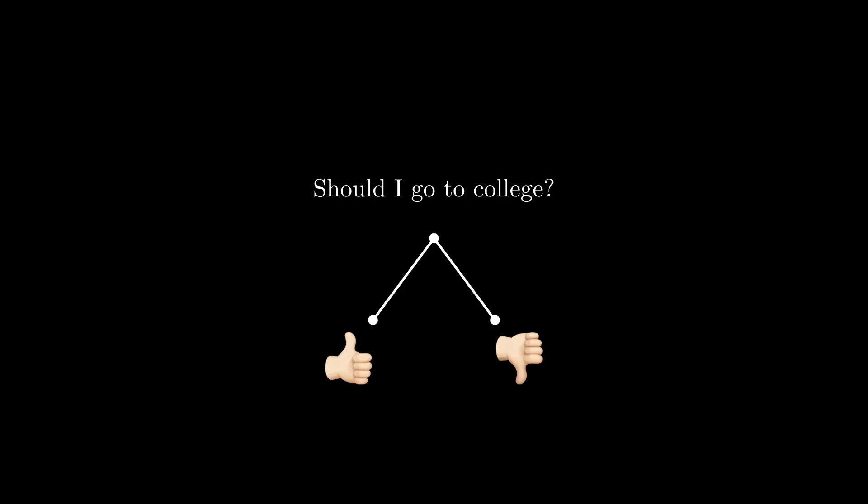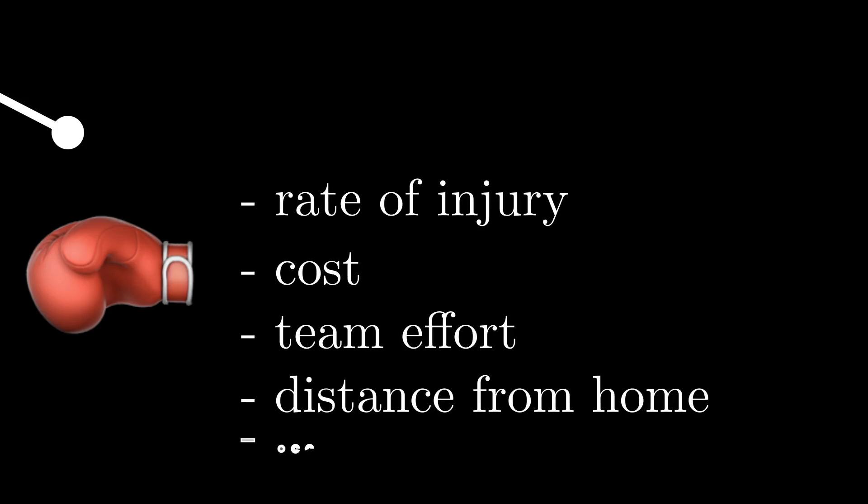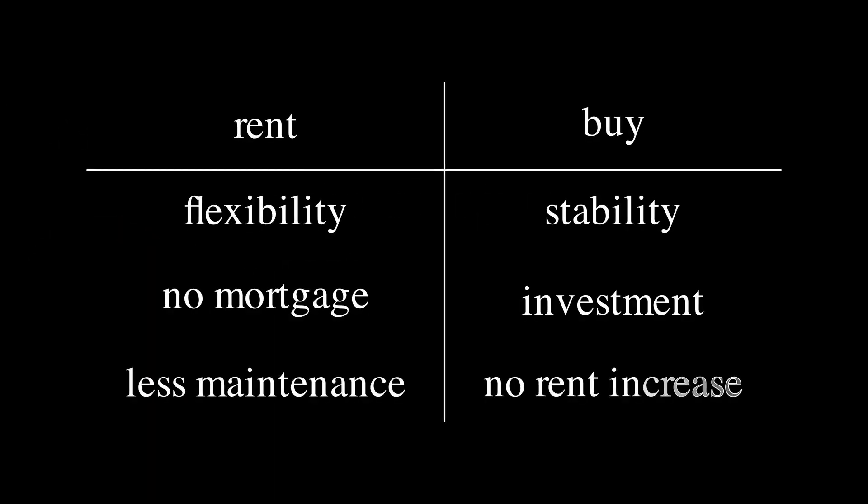Decisions are based on options, and those options can have very diverse properties that are often difficult to put into perspective. You might have found yourself jumping back and forth between the pros and cons between possible choices, just increasing the overall confusion you might have already found yourself in to begin with.